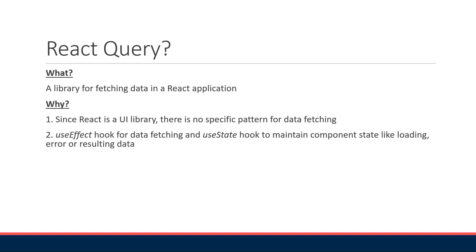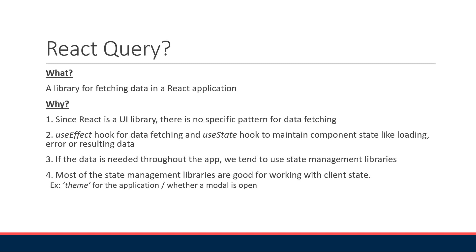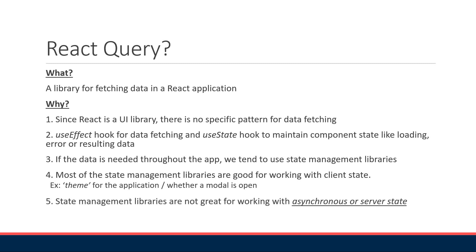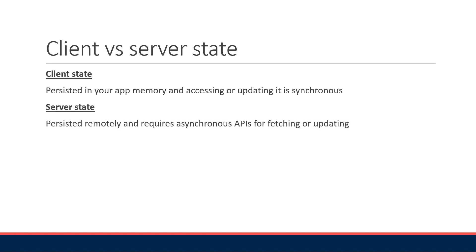If the data is needed throughout the app, we tend to use State Management Libraries. But what is important to note here is that most State Management Libraries are good for working with client state — state like the theme for the application or whether a modal is open. They are not great for working with asynchronous or server state, because server state is very different from client state. Client state is persisted in your app memory and accessing or updating it is synchronous. Server state, on the other hand, is persisted remotely in a database perhaps, and requires asynchronous APIs for fetching or updating.